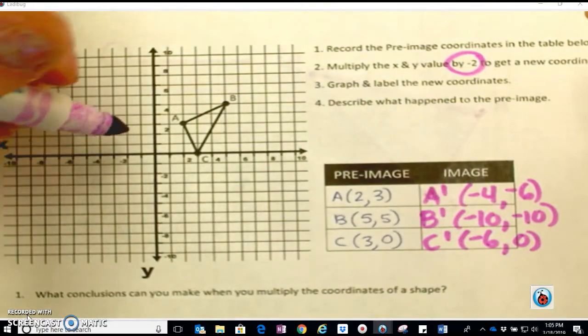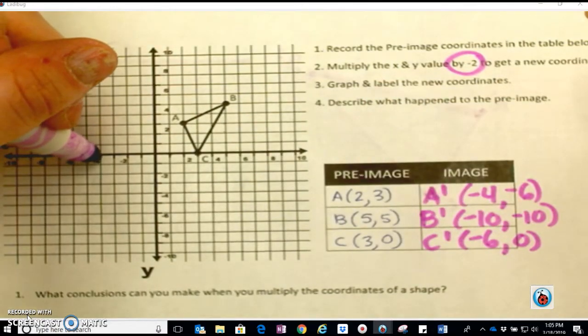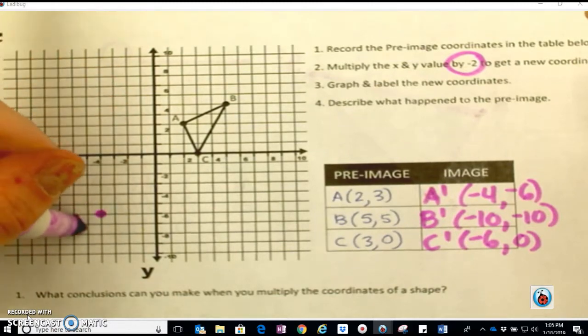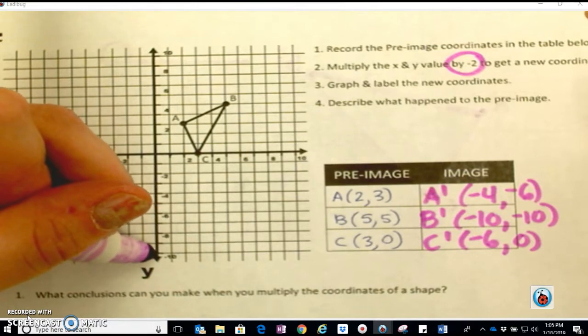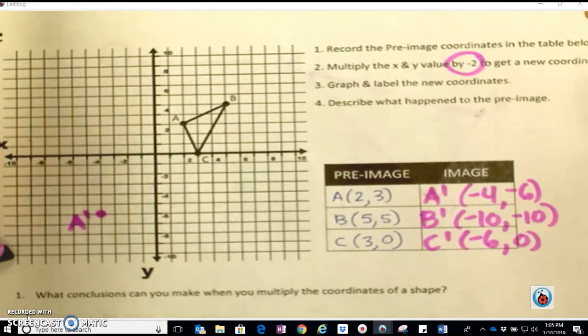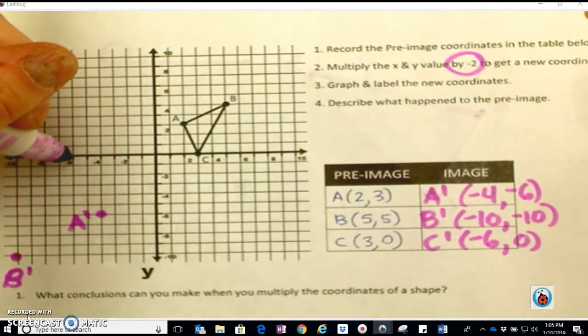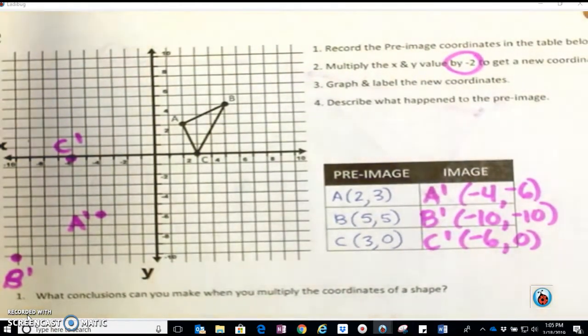We're going to go ahead and graph those. Negative 4, negative 6, so A prime is right there. Negative 10, that's B prime. Almost put a C. And negative 6, 0.